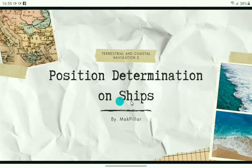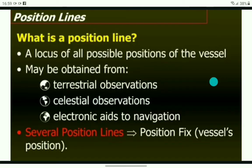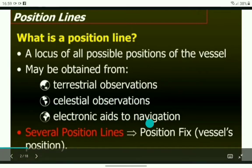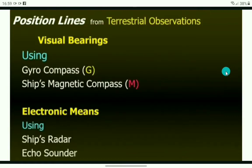We will focus on position lines and position circles, which represent the possible positions of the vessel at sea. A position line is a locus of all possible positions of the vessel, and can be derived from terrestrial observation, celestial observation, or electronic aids to navigation. In this presentation, we will examine how position lines are obtained from terrestrial observation.